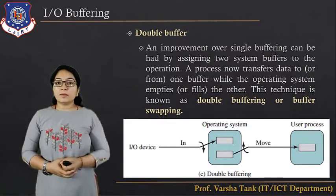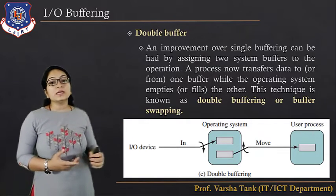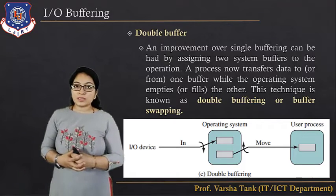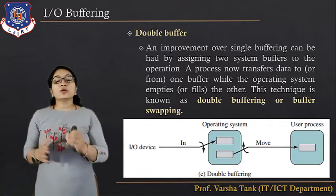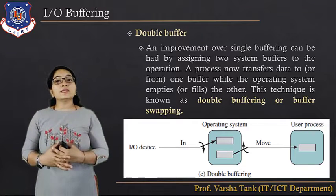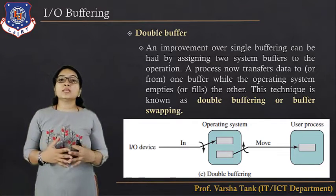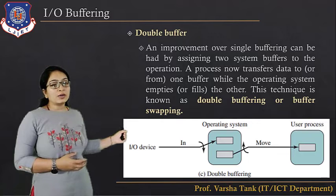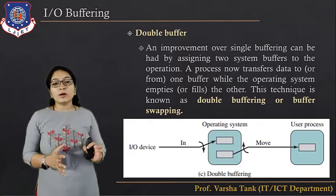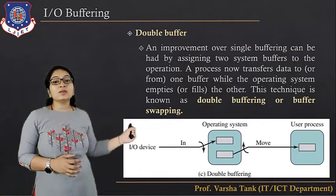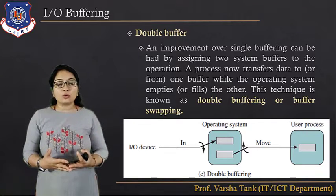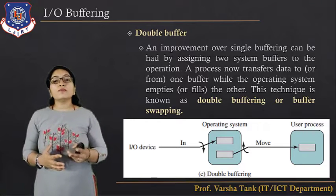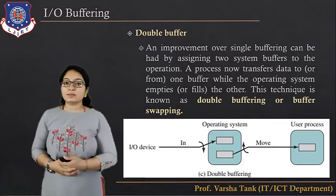The next type is double buffer, which is an improvement over single buffering by assigning two system buffers to operations. The process transfers data to or from one buffer while the operating system empties or fills the other. This technique is known as double buffering or buffer swapping, allowing the IO device to interact with the other buffer while the OS handles the first.